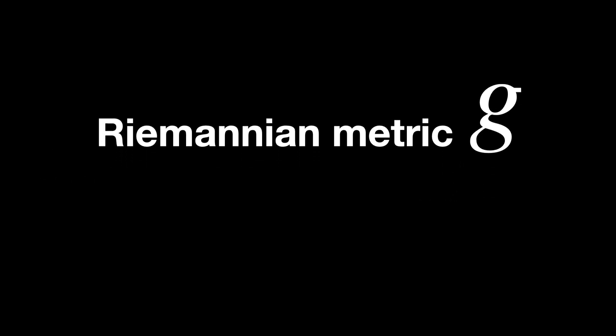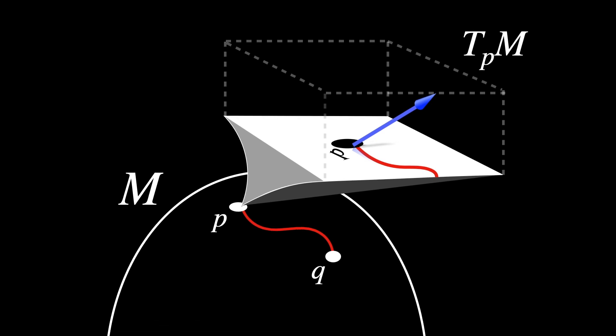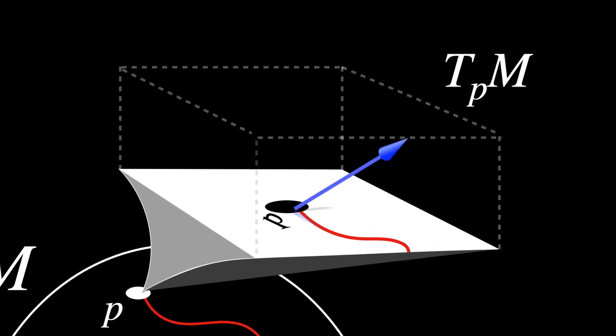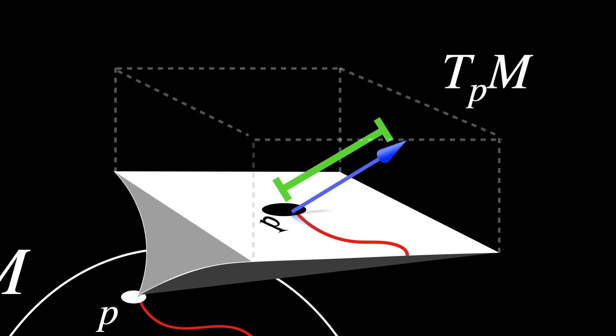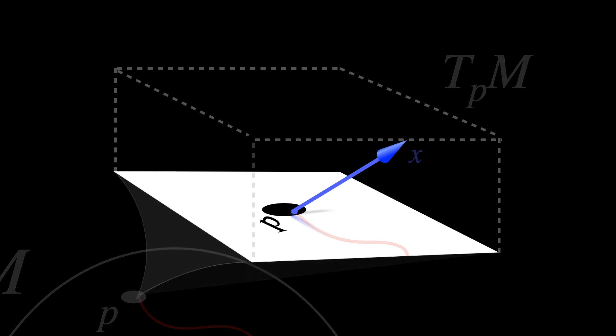You see this g here? That's the Riemannian metric. You see, our tangent space TₚM does not come with a measuring stick that gives us tangent vectors a concept of length and angle. A Riemannian metric puts a measuring stick on every tangent space, and it does so through the inner product. If you'd like to know more details on how that's done, leave us a comment below.